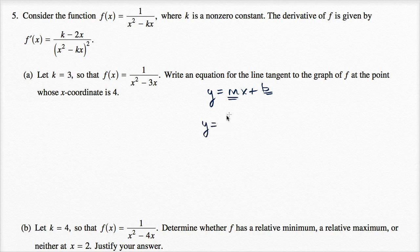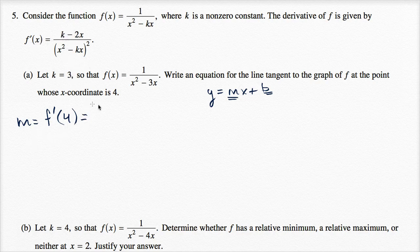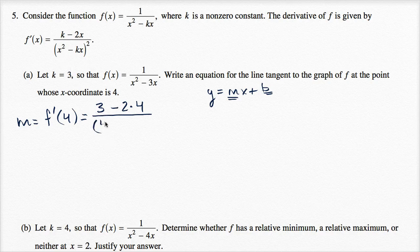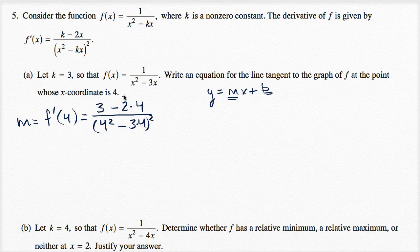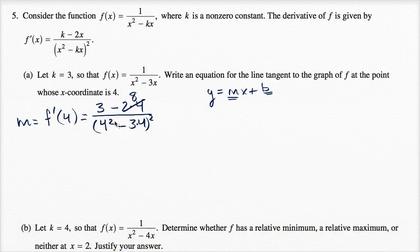We can say that m is going to be equal to f prime when x is equal to four — f prime of four. We know that k is equal to three, and they gave us f prime of x, so it's going to be three minus two times four, over four squared minus three times four, and then we square that whole thing.